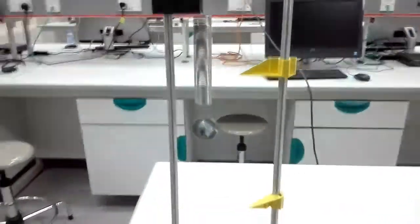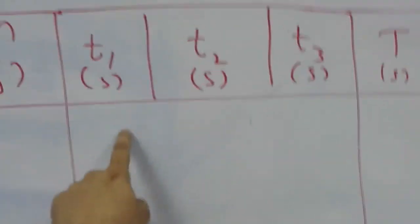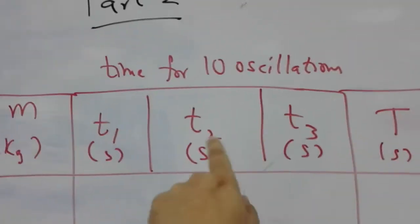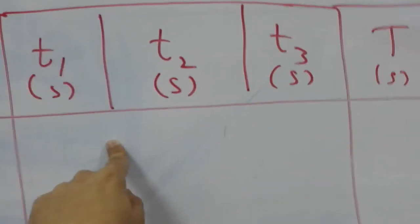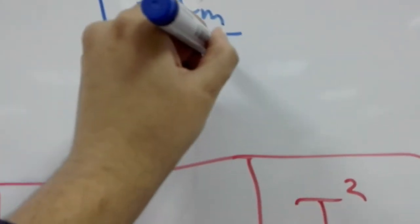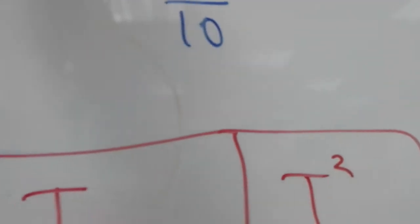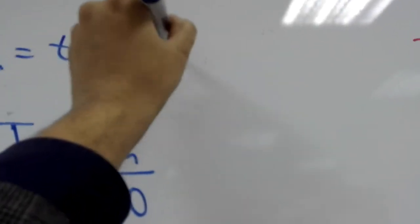Then you're gonna measure the time of 10 oscillations, and for each mass, you're gonna hang different masses. For each mass, you're gonna take three readings for 10 oscillations, and then take the mean of this, and then divide that. Remember the time period, let's write that down. The time period is going to be the mean time divided by 10, where the mean is T1 plus T2 plus T3 divided by 3.